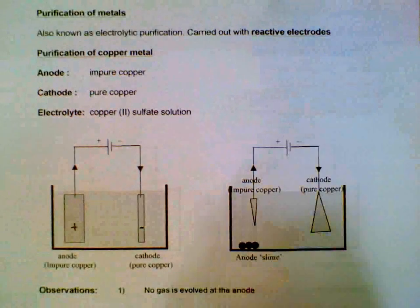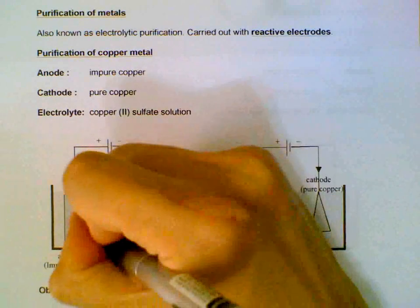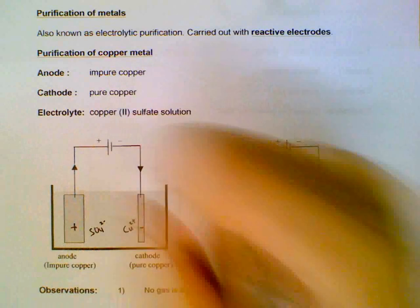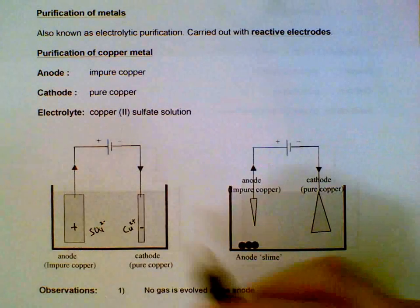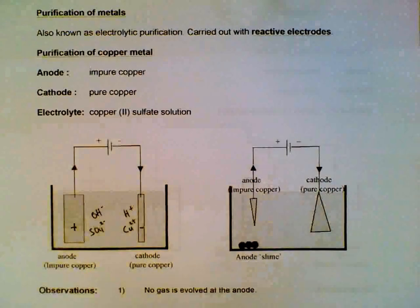So the ions in the electrolyte - we have copper and sulfate, and since it is an aqueous solution there is also hydrogen and hydroxide ions from water.